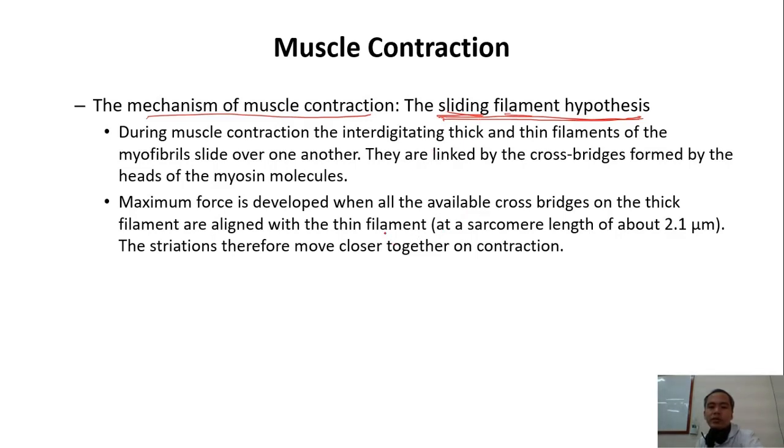And then when the muscle is contracted, one sarcomere will have a length of about 2.1 micrometers. This is the length of one sarcomere when the muscle is contracted. What is the diameter of myofibrillar? One micrometer. What is the diameter of one fiber? 60 to 100 micrometers.